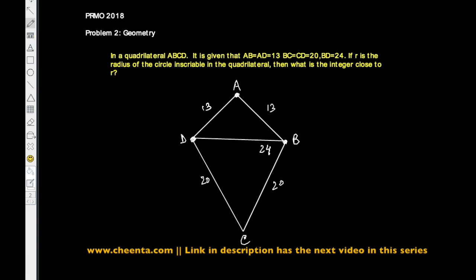That's a kite, and it's also given that BD is 24. This diagram is not drawn to scale, but we are interested in the radius of a circle that can be inscribed inside the quadrilateral. So basically we have a circle which can be inscribed inside the quadrilateral.